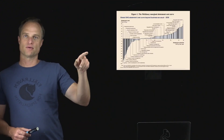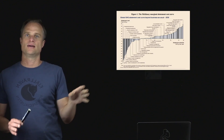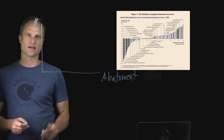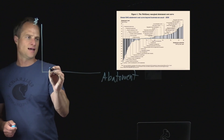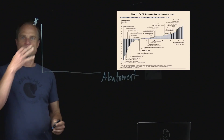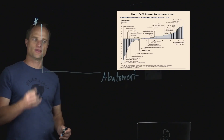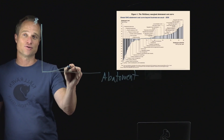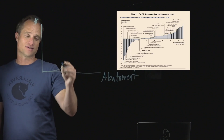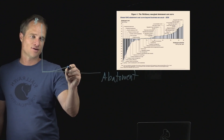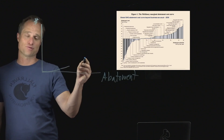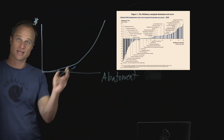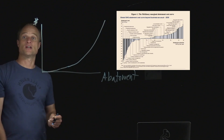The most important thing I want you to take away from this graph — and I know you can't read it at this font size — is the general shape. We have abatement on the horizontal axis and monetary costs on the vertical. As we abate more and more, as we reduce incrementally those units of emissions, the earlier units of abatement are going to be the cheapest. And we'll use the right-hand side of this McKinsey figure as our generalized model for marginal abatement cost.